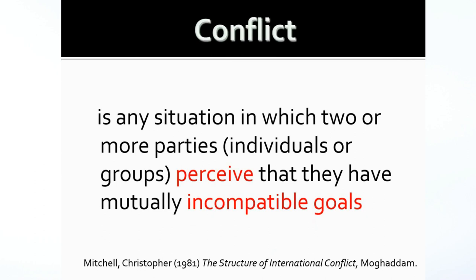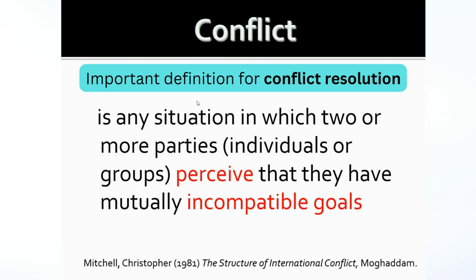This is a famous definition of conflict suggested by Christopher Mitchell: conflict is any situation in which two or more parties perceive that they have mutually incompatible goals. This is a very important, foundational concept in peace and conflict studies, particularly conflict resolution. Because two or more parties perceive that they have mutually incompatible goals.